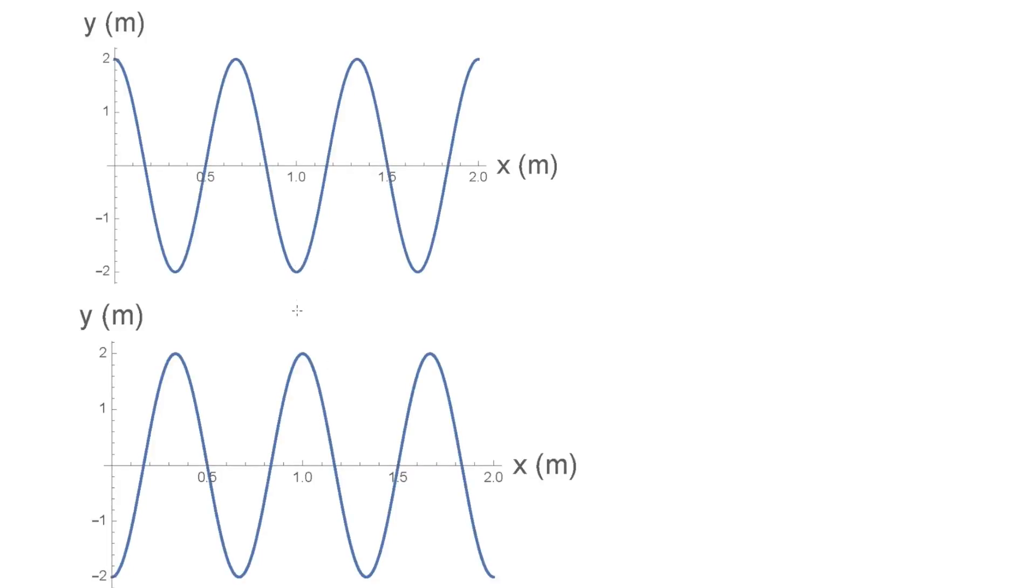Okay, so in this one we're given two diagrams and we're asked what the wave equation could be. Now I just want to make the point that there's lots of possibilities for this wave equation. With the options you're given, only one is correct, but in general there is not just one solution, there's a number of solutions.